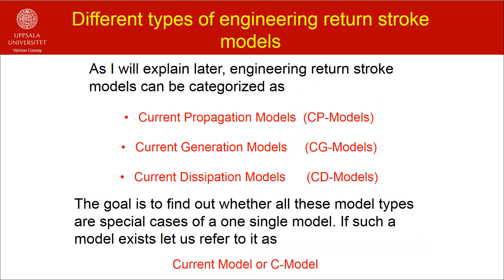As I will explain later, engineering return stroke models can be separated into three model types: the current propagation models, current generation models, and current dissipation models. The goal is to find out whether all these models are special cases of a single model. If such a model exists, let us refer to it as the current model or C model. That will be the mother of all engineering return stroke models.